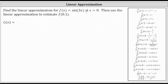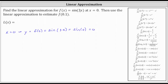Let's first determine the point on the function where x equals zero. If x equals zero, then the y-coordinate is equal to f of zero, which is the sine of three times zero, which equals the sine of zero, which is zero. So now we know when the x-coordinate is zero so is the y-coordinate, and therefore we're looking for the equation of the tangent line at the point zero comma zero.